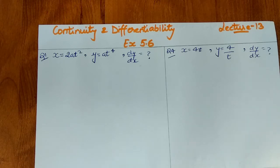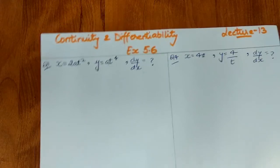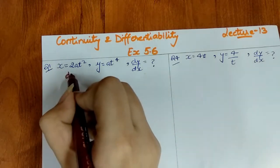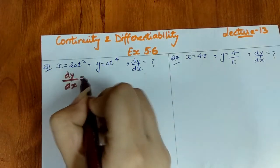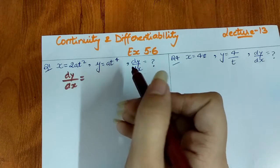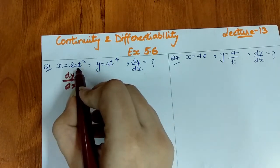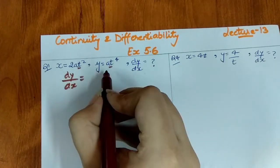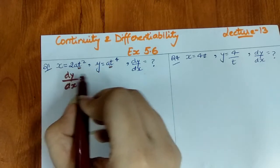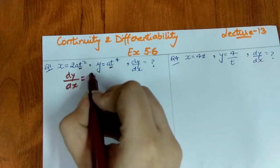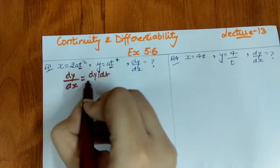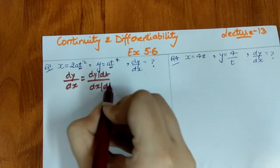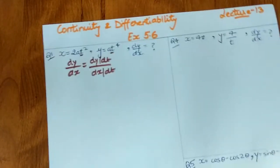Now we will solve some NCERT questions. The first question gives us x and y values and we need to find dy/dx. As I told you in the last video, when we find dy/dx for parametric equations, we differentiate x and y with respect to the parameter t and divide: dy/dx = (dy/dt) / (dx/dt).